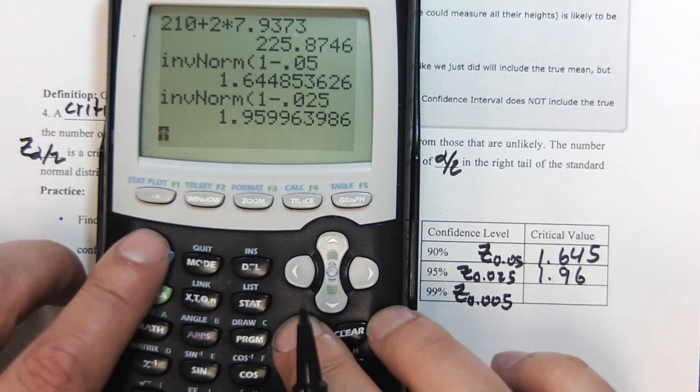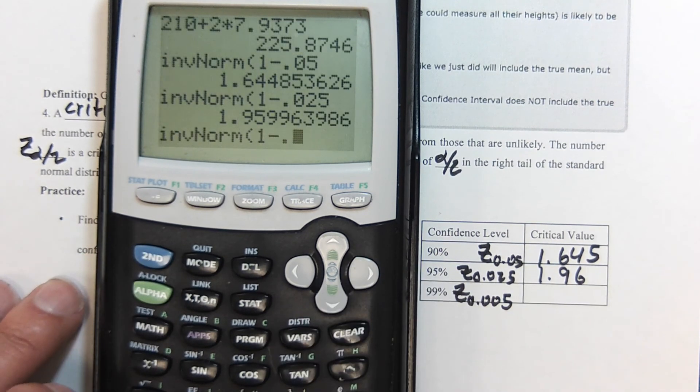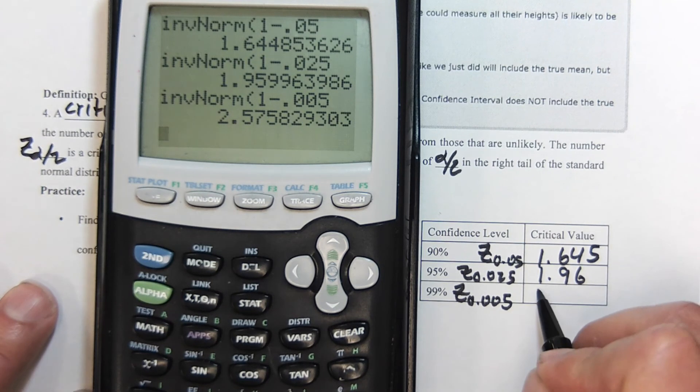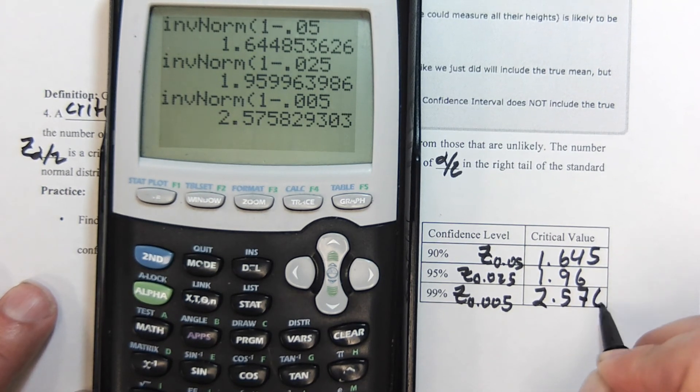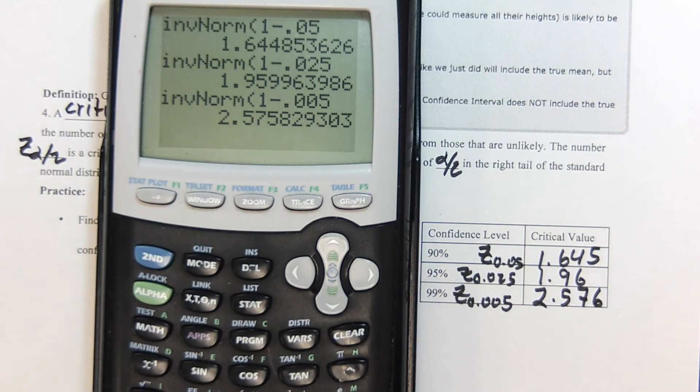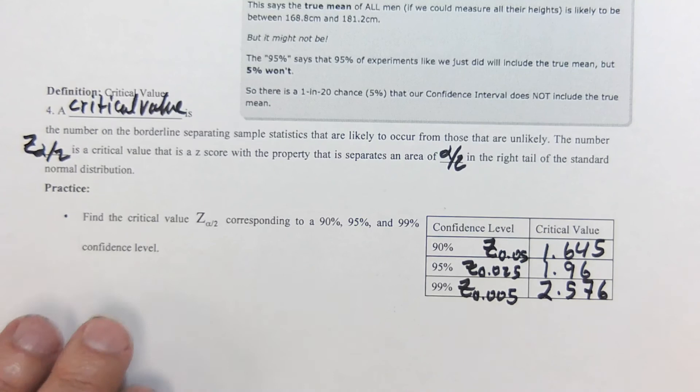So inverse norm 1 minus 0.005 is here. These are Z values—2.576 we'll say—and we'll use these values consistently and often.